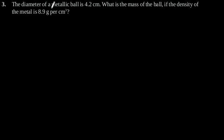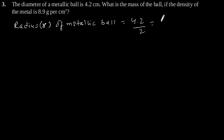Given is diameter of metallic ball as 4.2 cm. Radius R of metallic ball will be 4.2 divided by 2 which is equal to 2.1 cm.